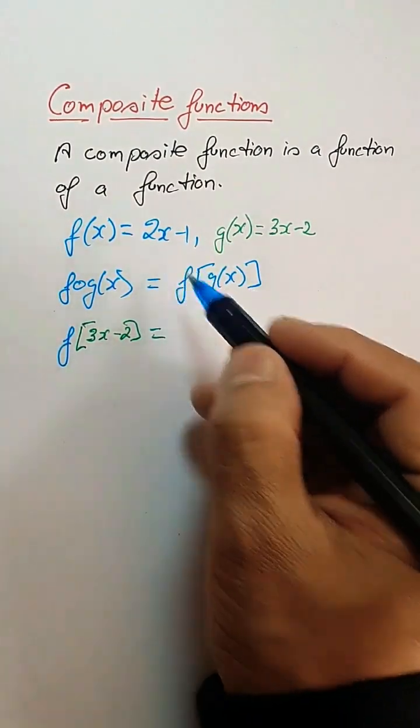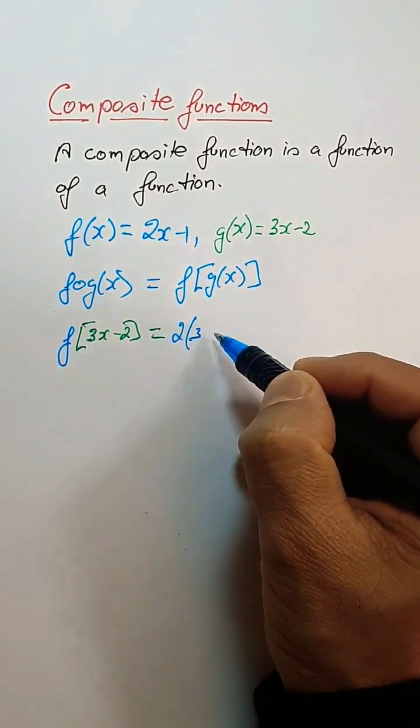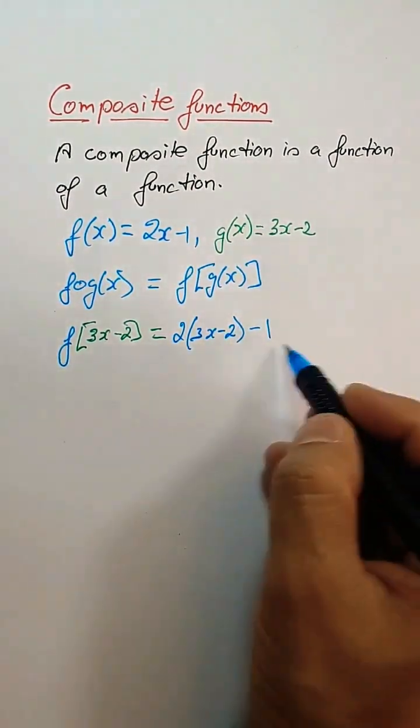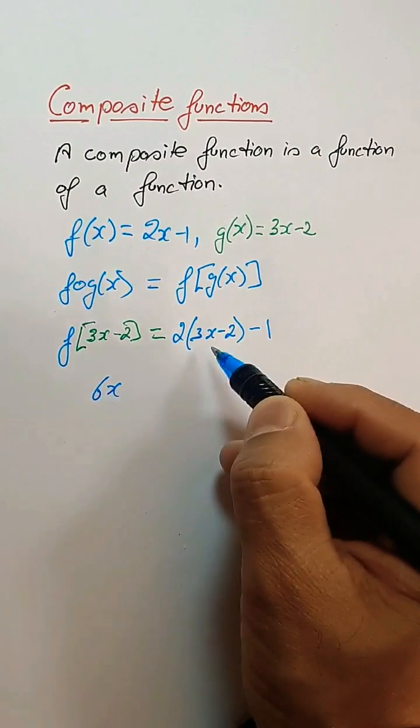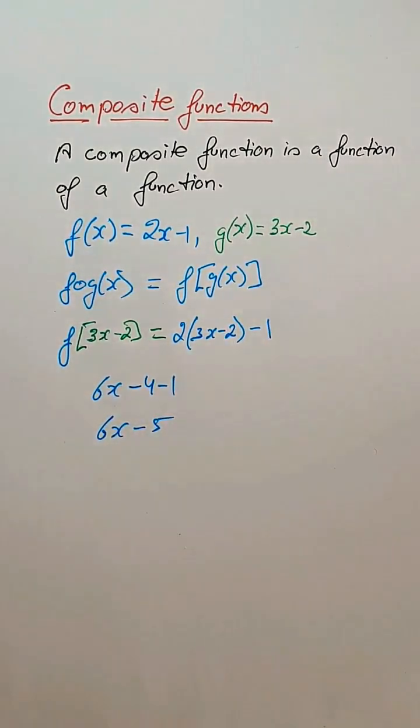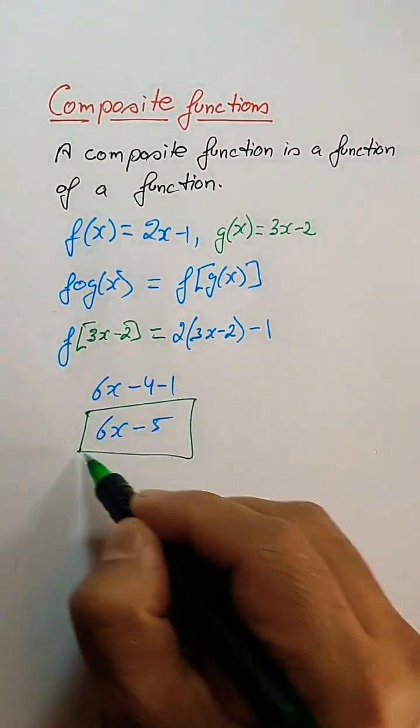This is twice of 3x minus 2, then minus 1. Opening the bracket: 2 into 3 is 6x minus 4, minus 1, which is 6x minus 5. This will be the composite function fog of x.